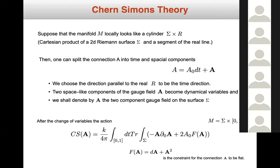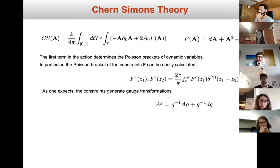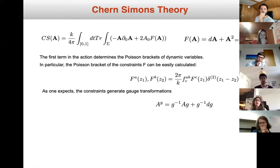After changing these variables, the action of Chern-Simons looks as follows, and our manifold is Σ times the interval [0, T̄]. The first term in the action determines the Poisson brackets of the dynamical variables. In particular, the Poisson brackets involve the constraint F(A̅), defined as the flatness condition: dA̅ + A̅ ∧ A̅ = 0.